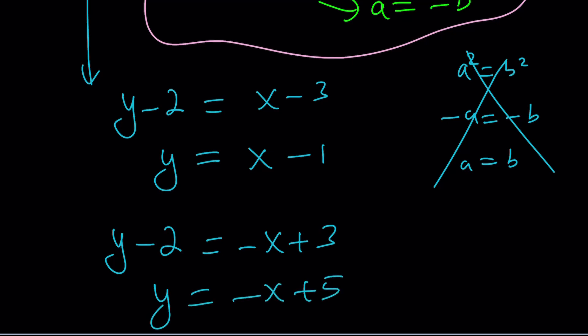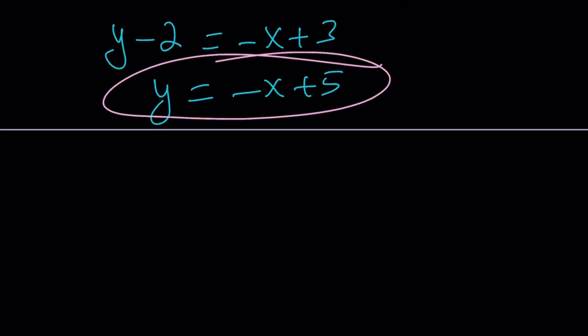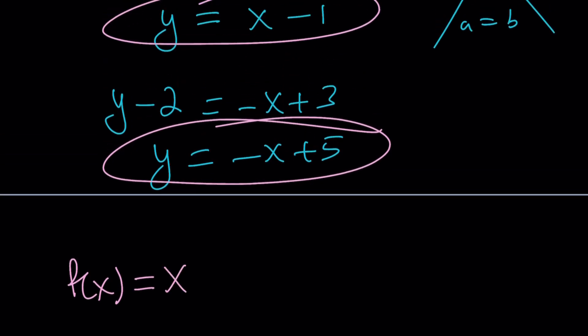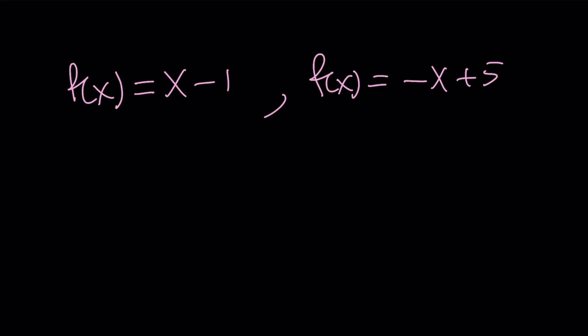So those are the solutions. So let's go ahead and write them down. So the function that satisfies our equation, one of them is f of x equals x minus 1, and the other one is f of x equals negative x plus 5. The first one was probably easier to find.